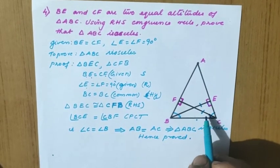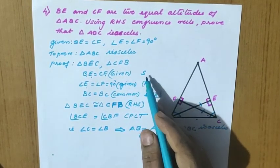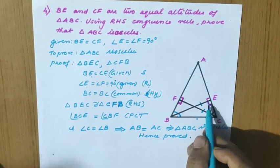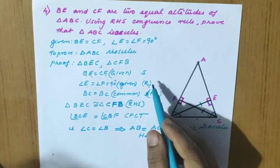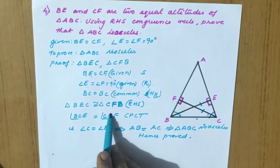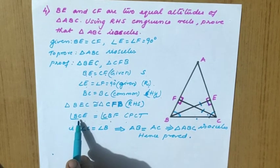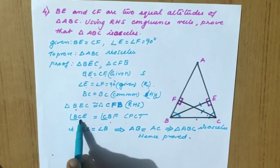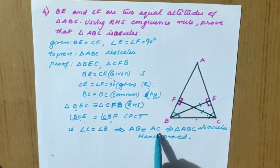To recap: BE and CF are equal altitudes, so angle E equal to angle F equal to 90 degrees. We choose triangles BEC and CFB — the side opposite to 90 degrees is BC in both, making it the common hypotenuse. By RHS, the triangles are congruent. By CPCT, angle C equal to angle B, so AB equal to AC, therefore triangle ABC is isosceles.